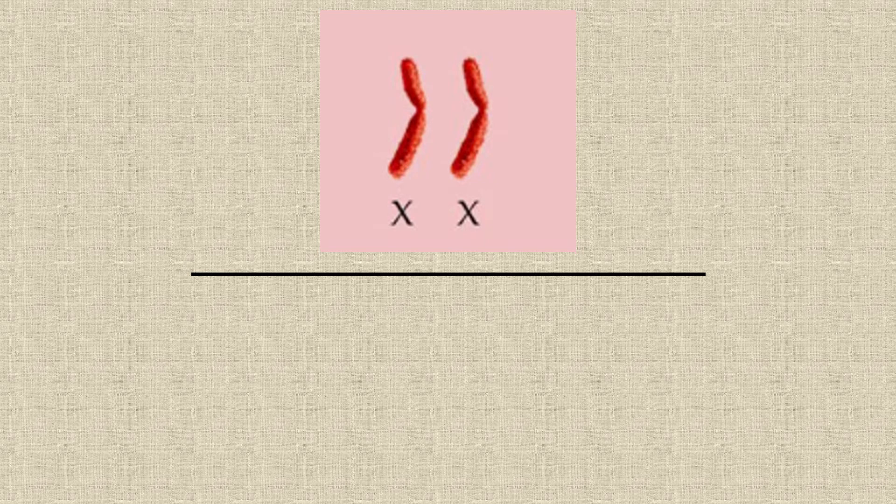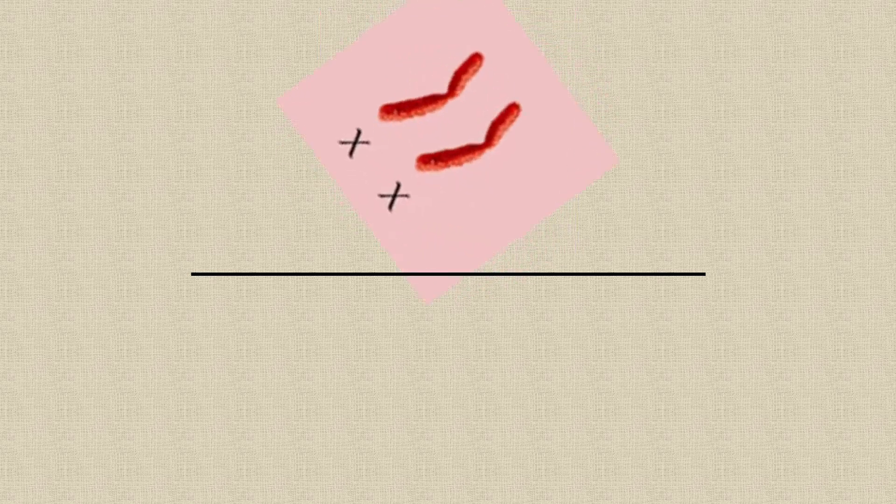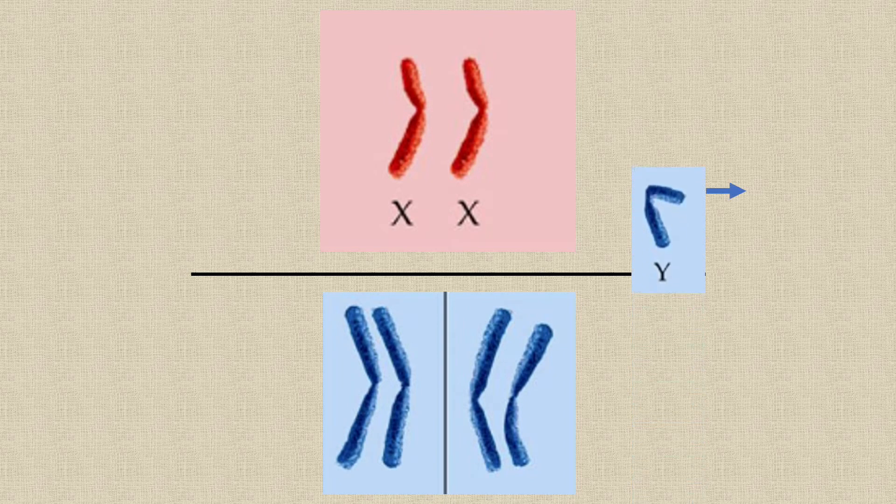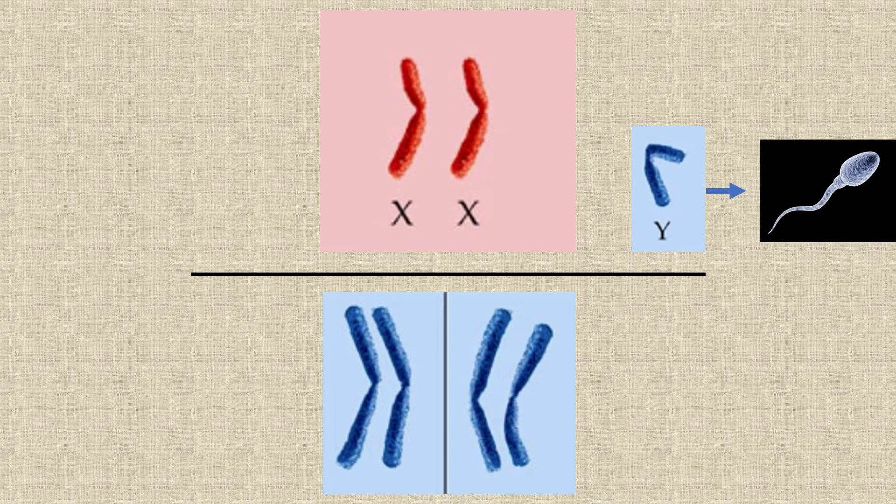Involved in the sex determination process is the balance or ratio of X chromosomes to autosomes, as well as the alternative splicing of different sex determining factors. The Y chromosome is not involved in the sex determination process. Instead, it contains genes for sperm formation in the adult males.